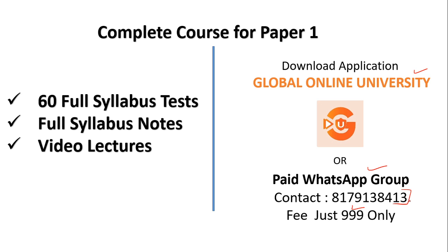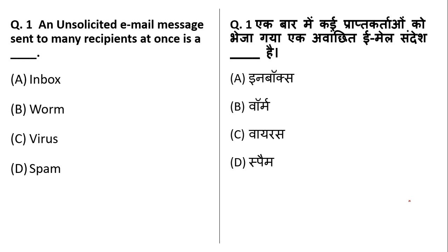This mock test is based on ICT. Question 1: an unsolicited email sent to many recipients at once is called spam. Spam means unwanted — sometimes we get mails from companies or banks we are not interested in. Companies randomly send emails to thousands of people for advertising. That email is known as spam. Inbox is where you get your emails, and worms and viruses are malware that harm your computer.